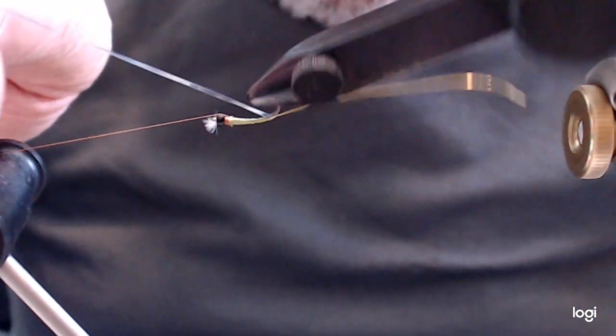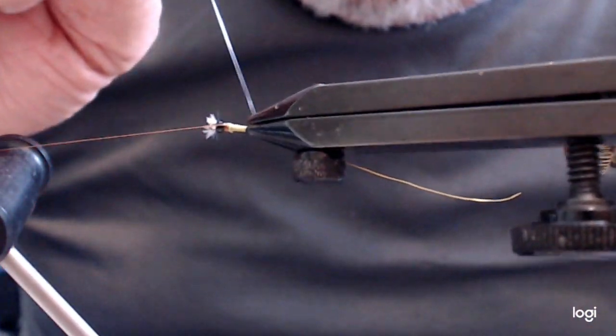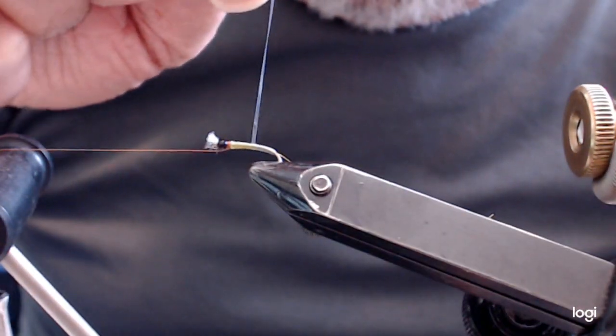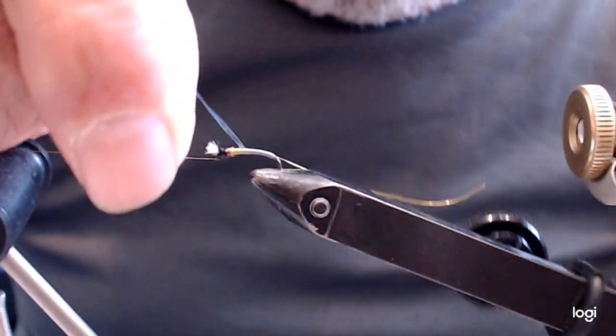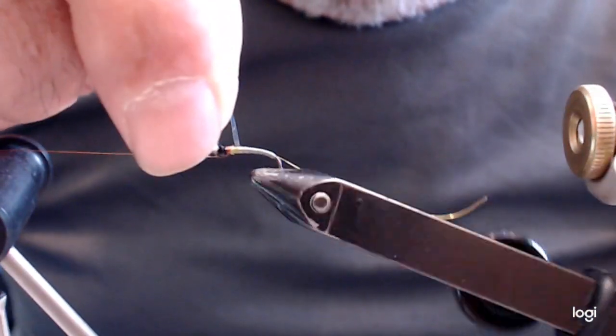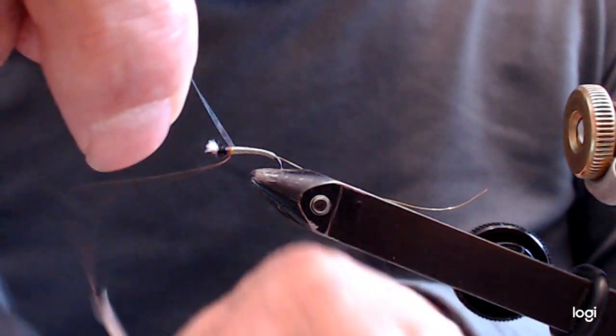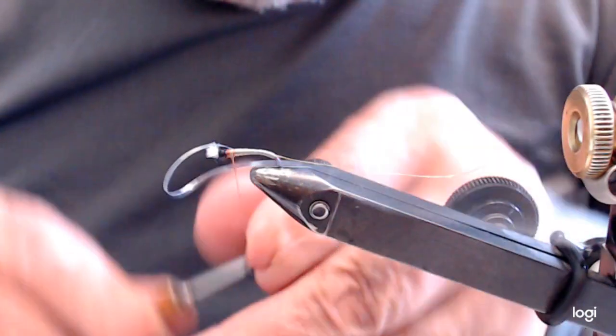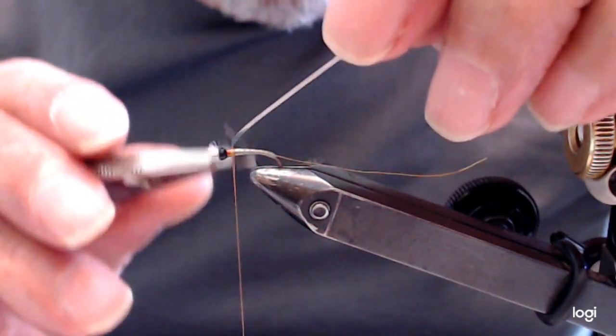Now, run this up the shank. Spiral it up. This is going to give it a nice gassy looking. I'm cutting green.